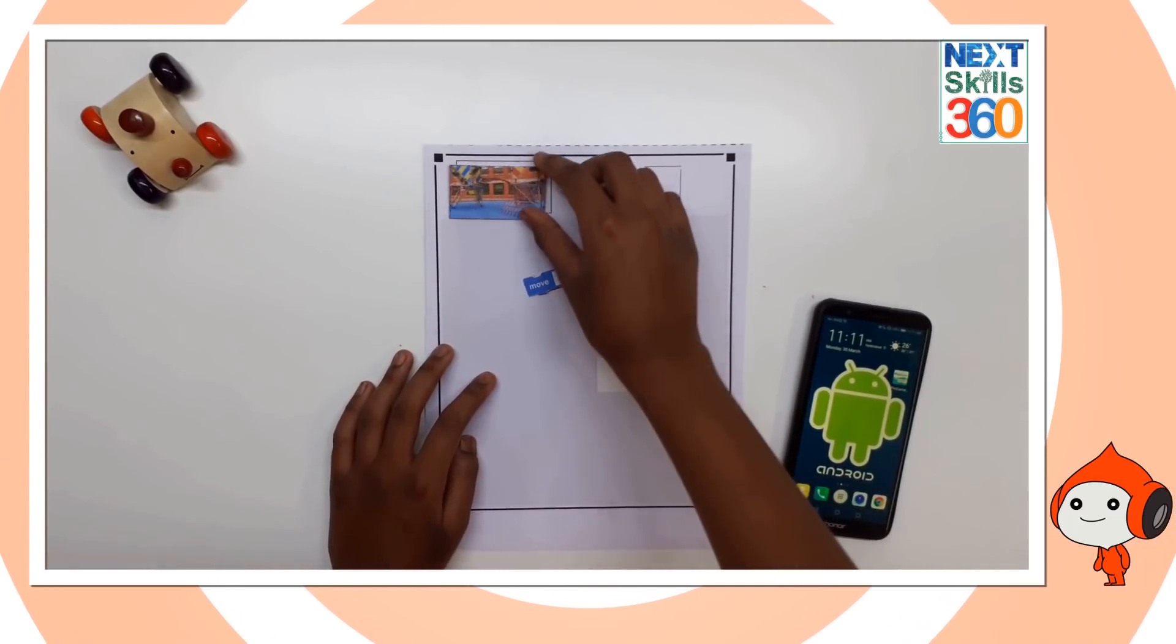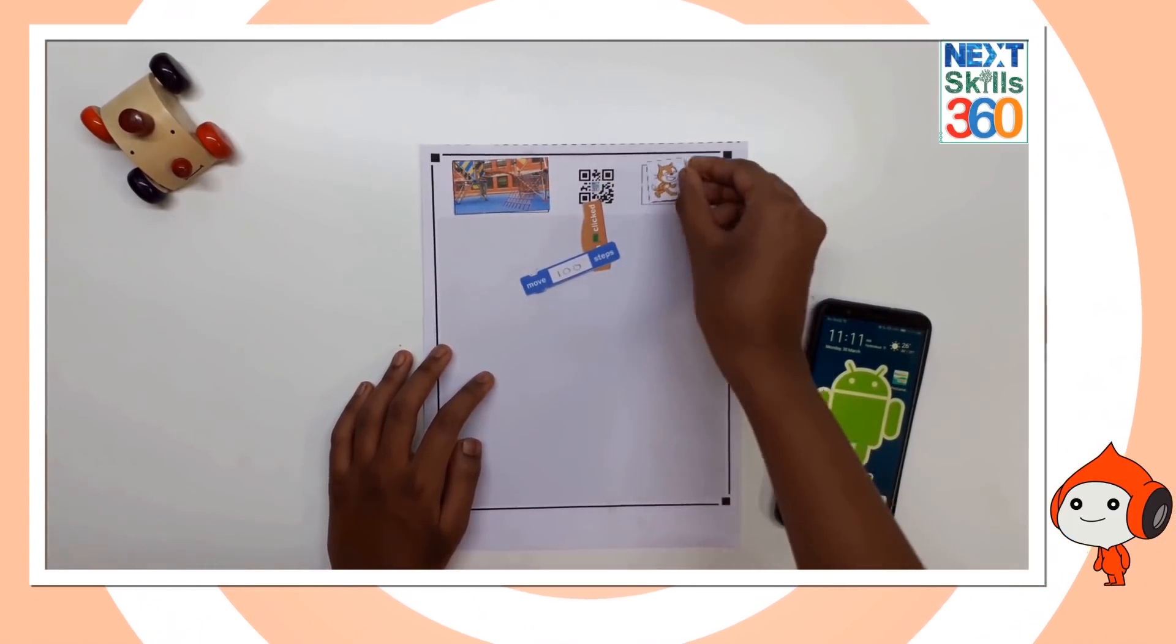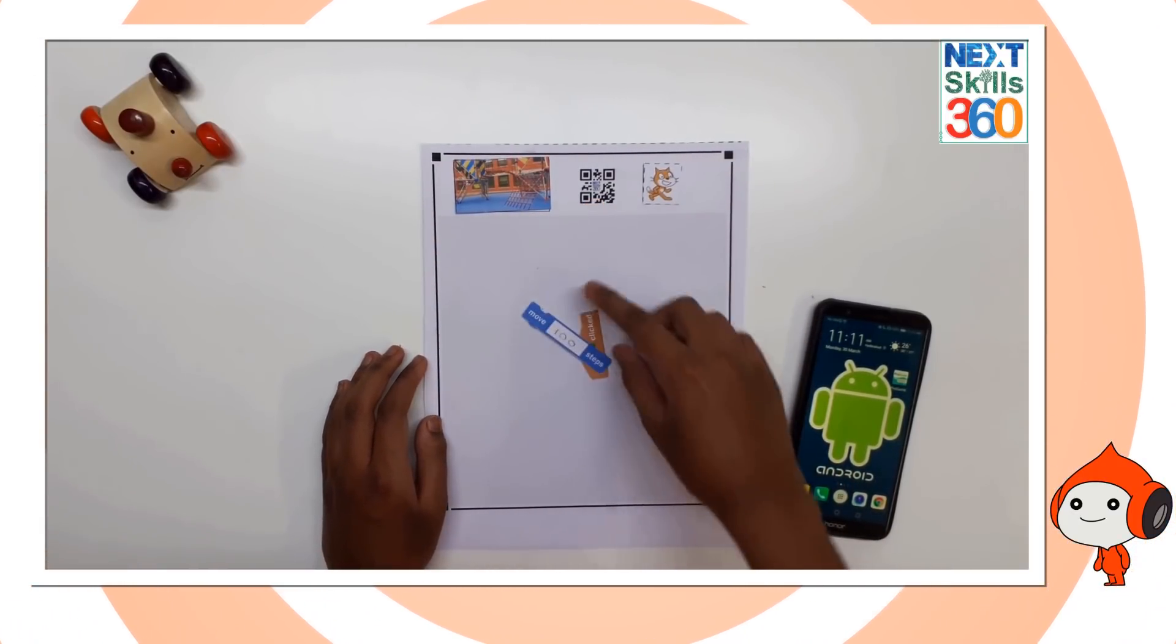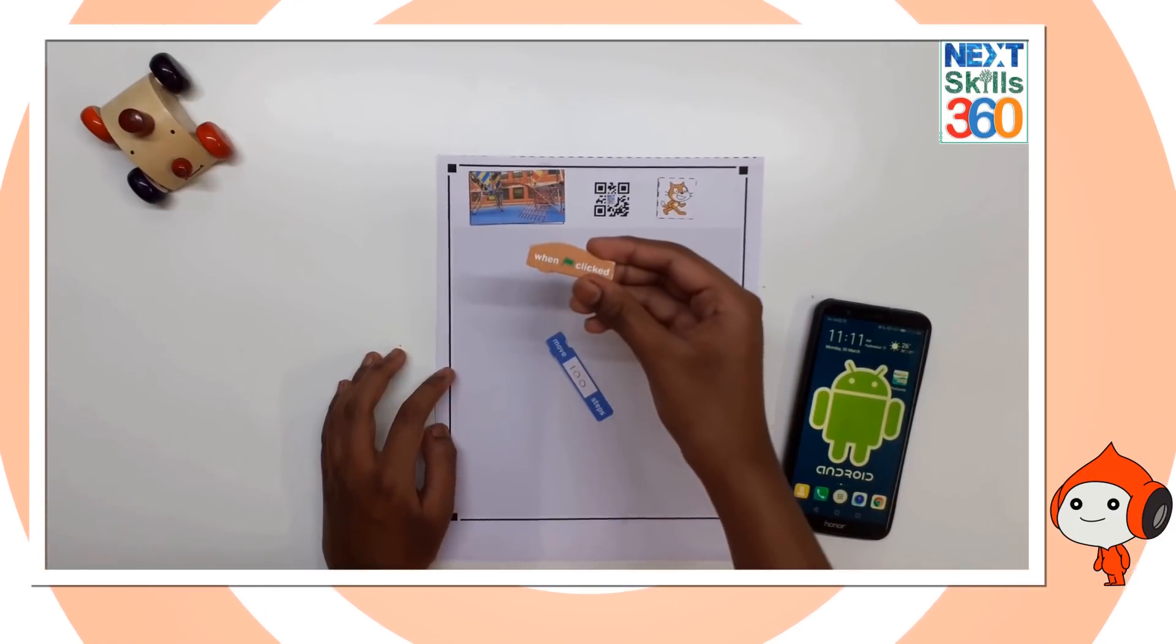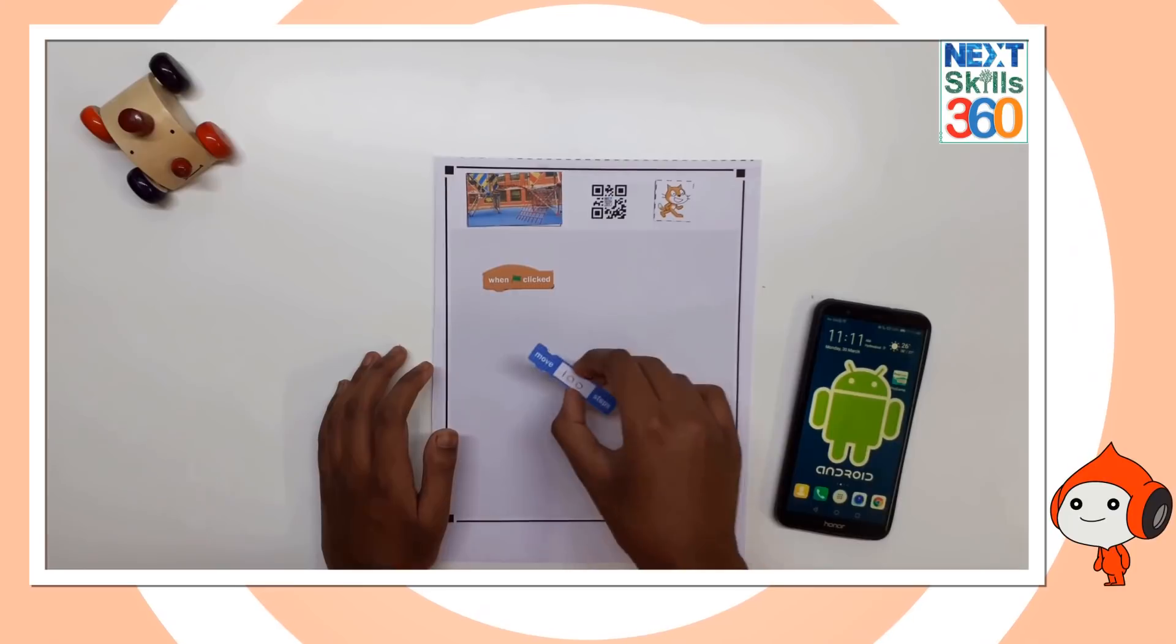Take a backdrop and place it over here. Take a sprite and place it over here. The gray area is where we place our blocks. Here I have the block 'when green flag clicked'. We place it like this, and underneath that I'm going to place the 'move 100 steps' block.